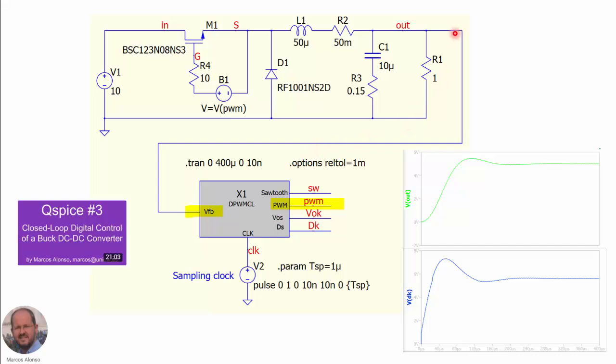We need to measure the output voltage and send it to our microcontroller, so we need an ADC — an analog to digital converter. We also need to generate the PWM signal to drive the switch. We prefer using C, C++ because it is going to run much faster on the Raspberry Pi Pico microcontroller than when using MicroPython.